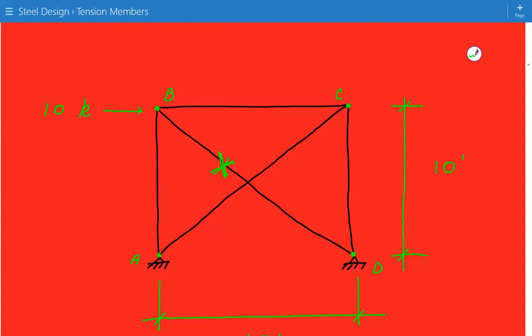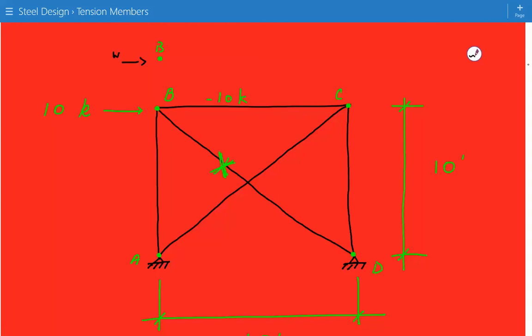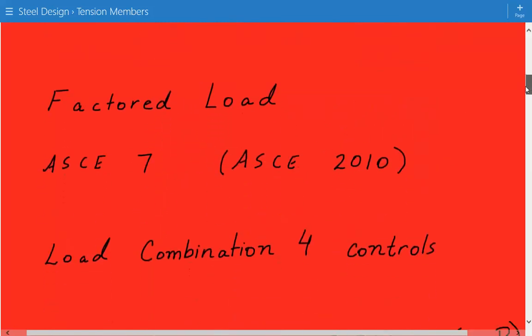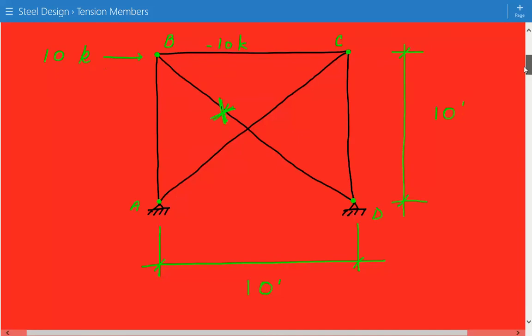Now I'm going to write negative 10 because it's in compression. So if we're looking at joint B, this is joint B. We have the 10-kip force, the wind load. This is the W, and then this is the force in member BC. So now that we know that there is a compression force in member BC equal to the wind load, now we can isolate joint C and figure out the tensile load in the diagonal brace, AC.